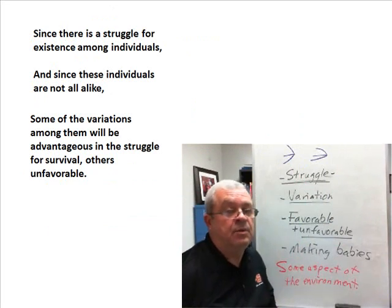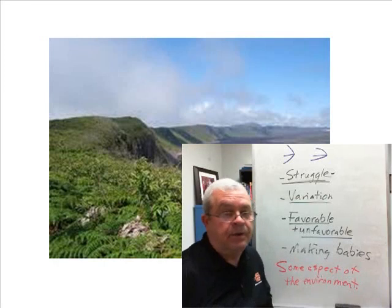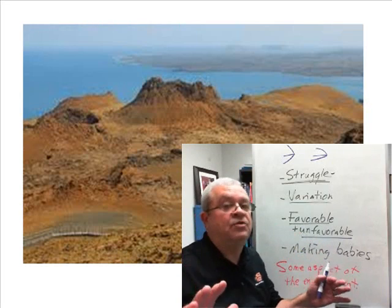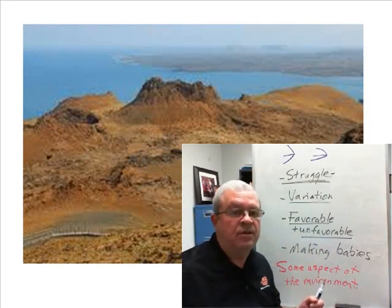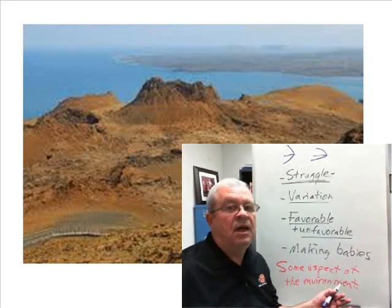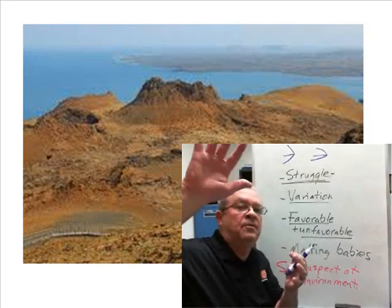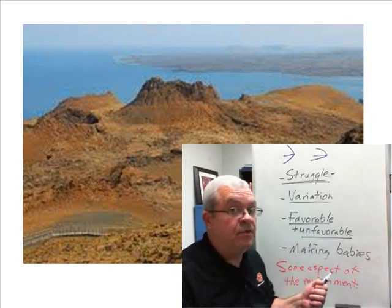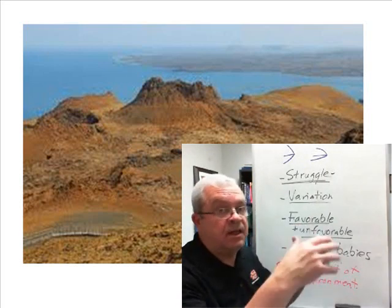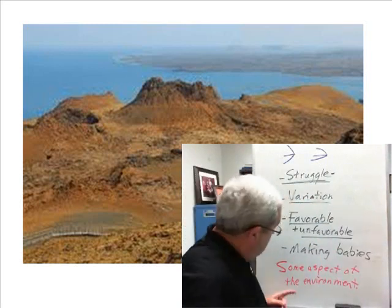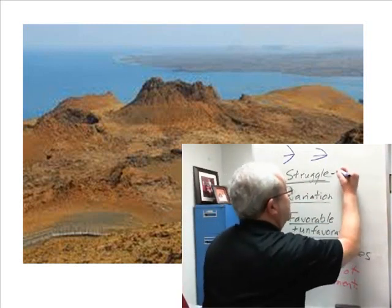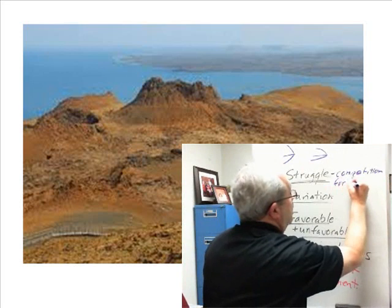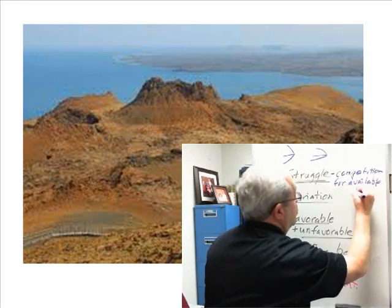Here are the three steps — struggle for existence among individuals to start things off. The Galapagos looks like a pretty nice place to live, but even if every single island was a tropical paradise, they wouldn't support an unlimited number of finches. As the finch population built up, some finches went over to try another island and made babies there. At some point, there wasn't enough food to go around, and the finches had to start competing with their siblings and cousins for food. The aspect of the environment providing the struggle was the competition for available food.